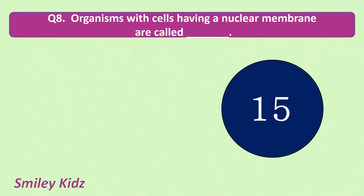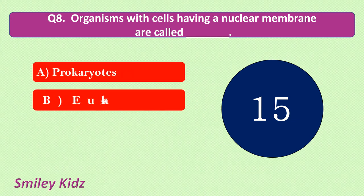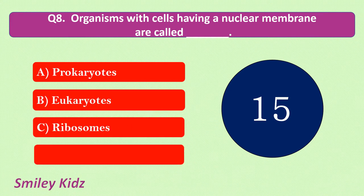Question number 8. Organisms with cells having a nuclear membrane are called. Your options are: prokaryotes, eukaryotes, ribosomes, lysosomes. Your time starts now.